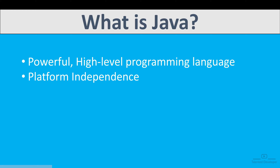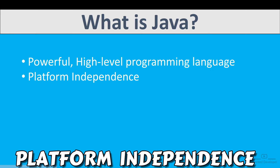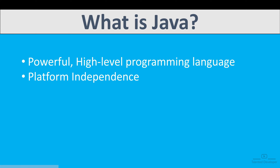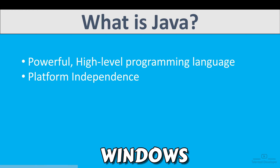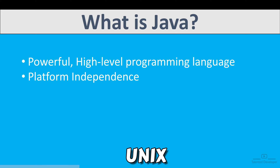One of the key features of Java is its platform independence, which means a Java program can run on any device with the help of the Java Virtual Machine. So if you have Java code, you can run it on a Mac device, a Windows device, or a Unix device.